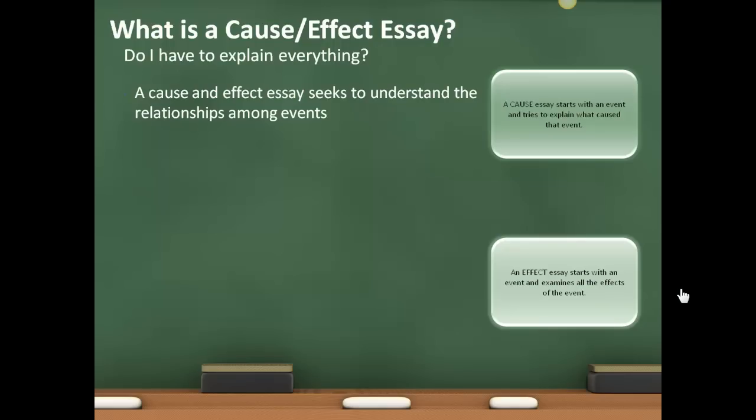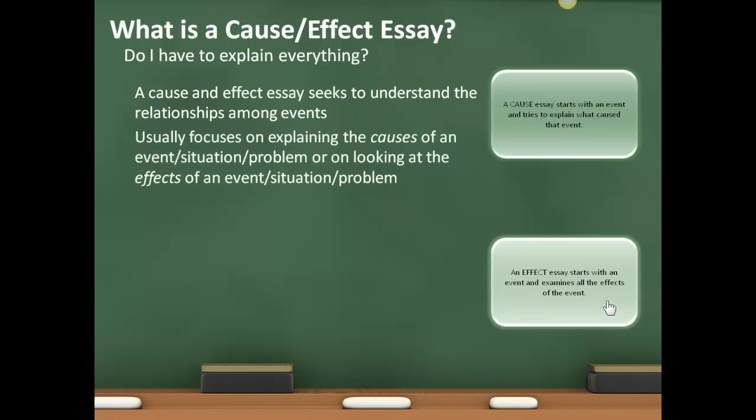So when I say cause-effect essay, you're actually writing one or the other. You're not necessarily going to be writing about both of those things or all of those things. So if you choose to focus on causes, a cause essay, you're going to start with an event and then explain what caused that event. Example, my car crash. If you are writing an effect essay, you are going to start with the event and then look at the effects of that event, what happened after the car crash. So causes are what come before and the effects are what come after. And it's good to keep that clear in your mind.